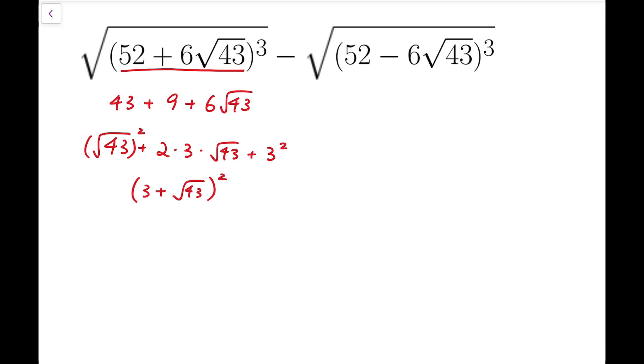And similarly, I can do that on the second part. And this will become 43 minus 6 root 43 added by 9. And using a similar argument, I can say it is square root of 43 minus 3 whole squared.